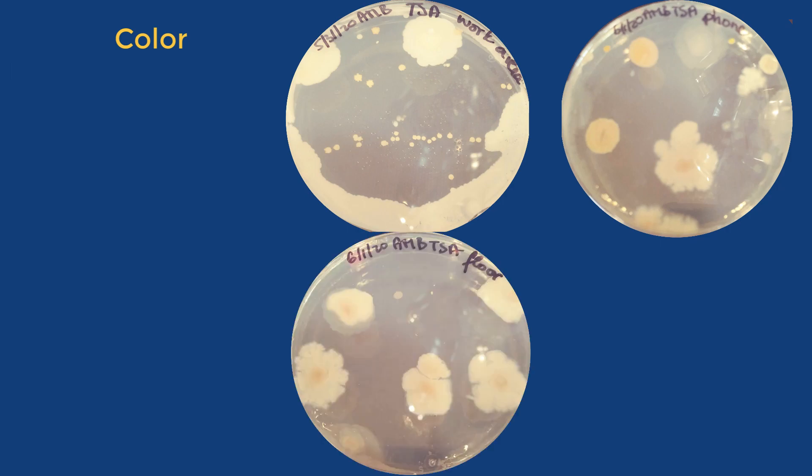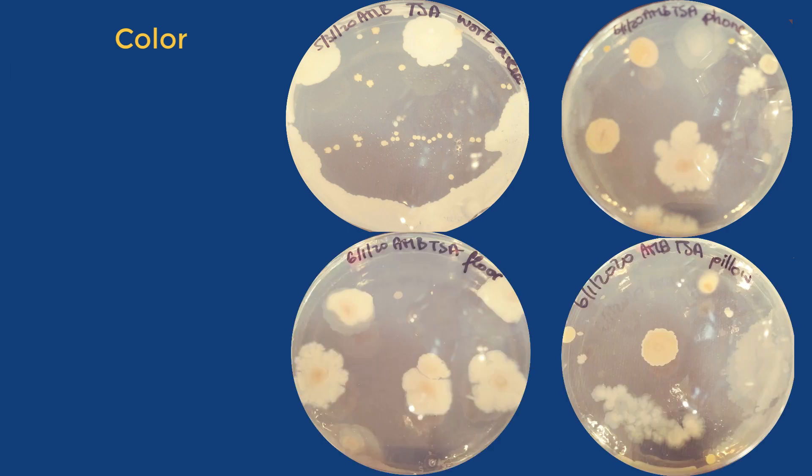Most environmental colonies are white or off-white in color, but any color is possible such as yellow, orange, brown, blue, green, pink, or black.